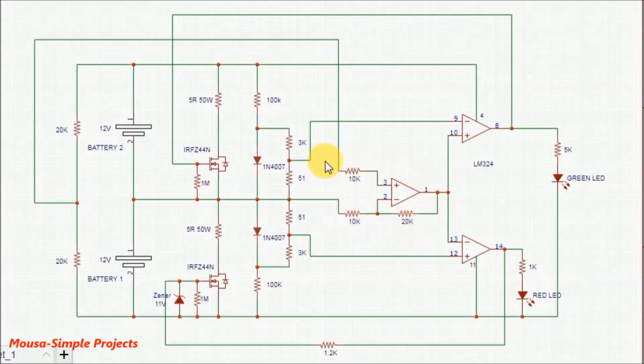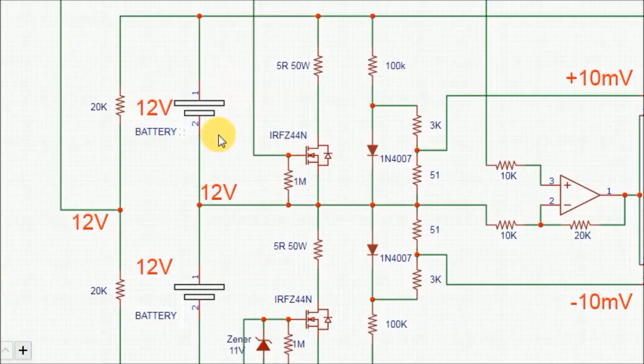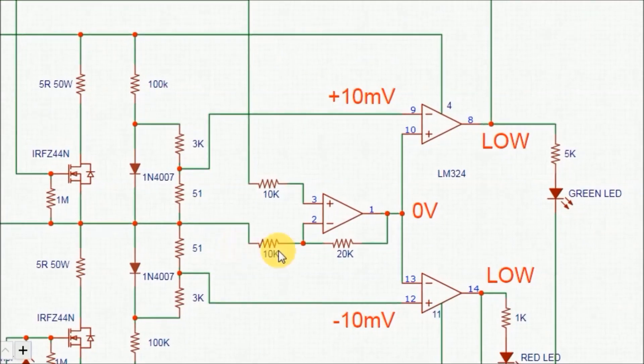I use this differential amplifier to find out the voltage difference between the two batteries. In the normal situation when the voltage of both batteries are exactly the same, let's say 12 volts each, the voltage here will be 12 volts and the output voltage from the resistor voltage divider also 12 volts. So the output voltage of the differential amplifier will be zero volts.